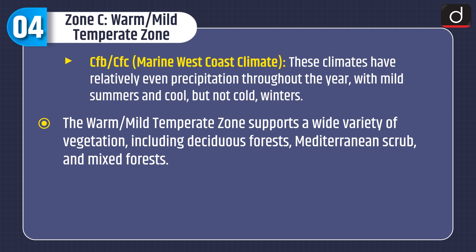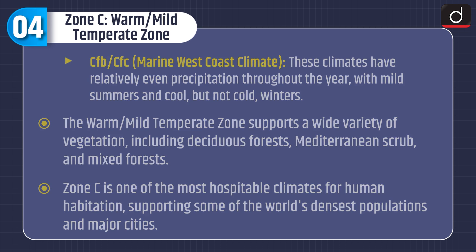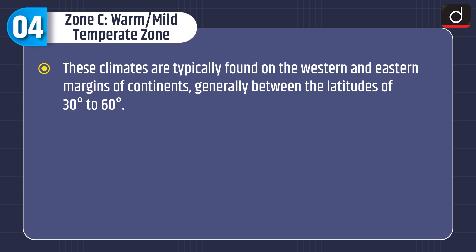The warm mild temperate zone supports a wide variety of vegetation, including deciduous forest, Mediterranean scrub, and mixed forest. Zone C is one of the most hospitable climates for human habitation, supporting some of the world's densest populations and major cities. These climates are typically found on the western and eastern margins of continents, generally between the latitudes of 30 to 60 degrees.